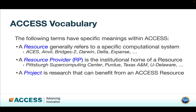There's some vocabulary that comes with ACCESS that's helpful to keep in mind. A resource generally refers to a particular computational system, such as ACES, ANVIL, BRIDGES2, DARWIN, DELTA, EXPANSE, or many other machines scattered around the country. The resource provider is the institutional home of a resource — for example, the Pittsburgh Supercomputing Center, Purdue, Texas A&M, or the University of Delaware; there are roughly 20 of these. A project is research that can benefit from using an ACCESS resource.